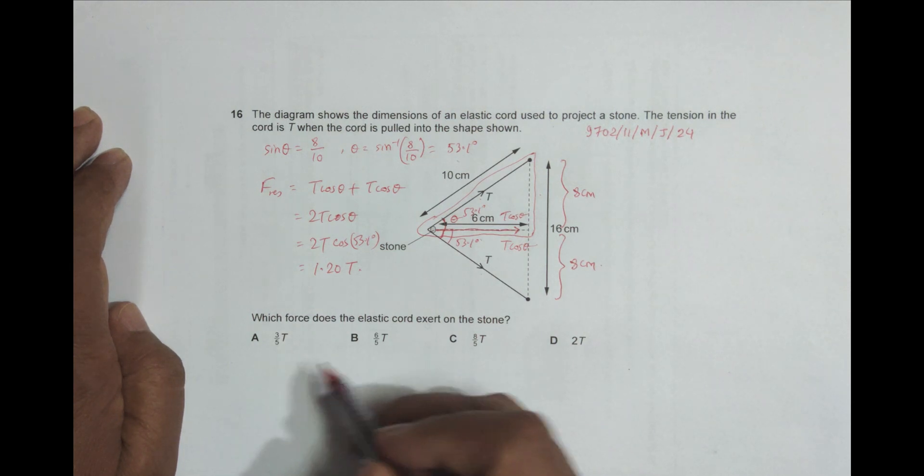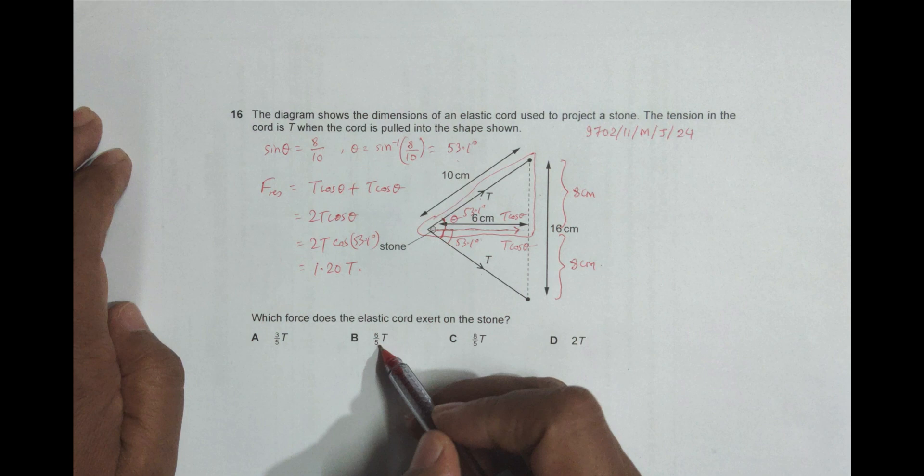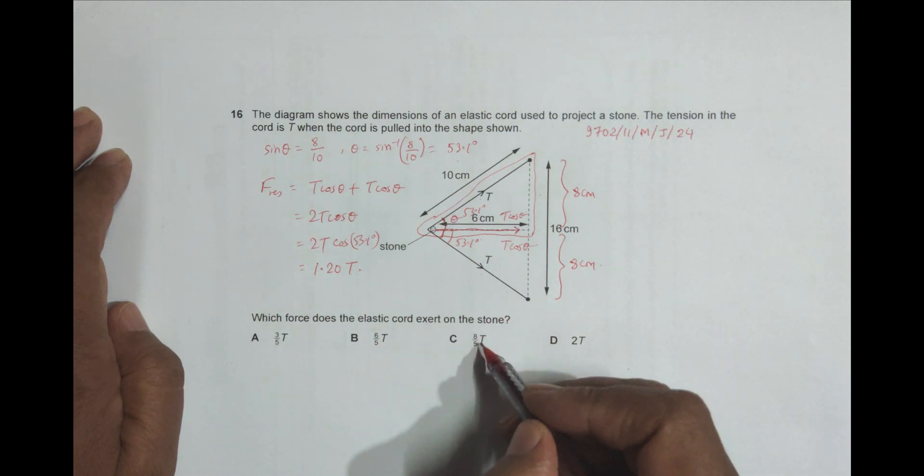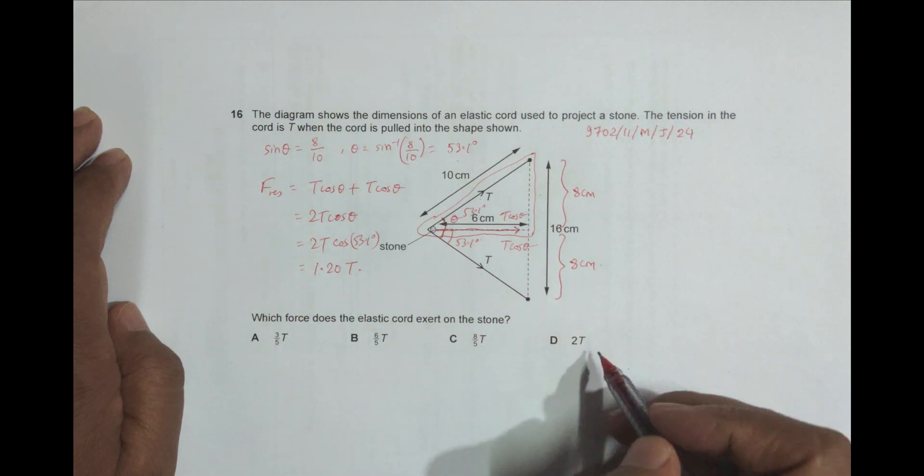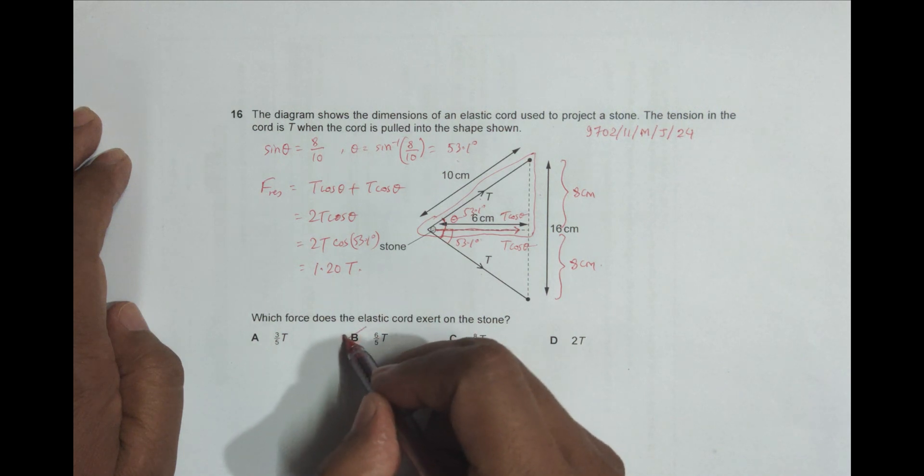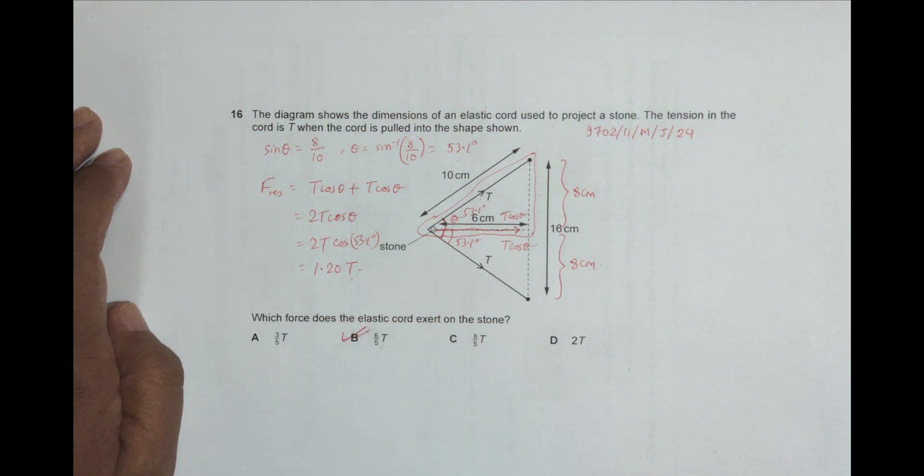If I go to choices: 3 by 5 is 0.6T, 6 by 5 is 1.20T, 8 by 5 is 1.6T, and this is 2T. So B should be the correct choice because this is equal to 1.20T.